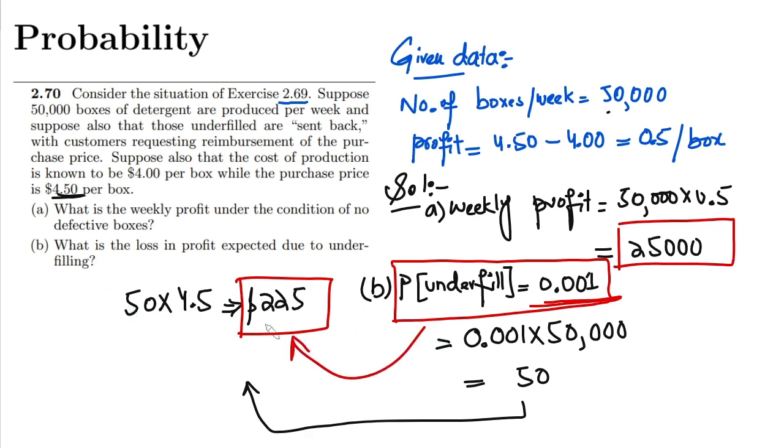part B, and this is the expected loss. So that is it for today, in which we have seen how to find the weekly profit when there is no loss, and similarly how to find the loss in profit when we encounter underfilling in the detergent boxes. I will see you with some more stuff in our upcoming video. See you soon.